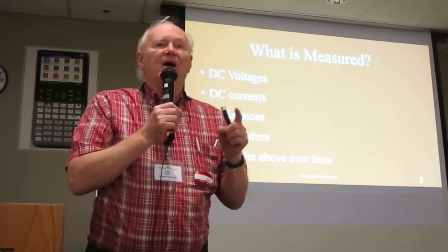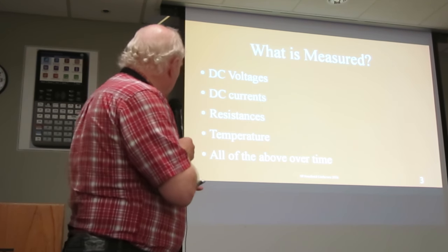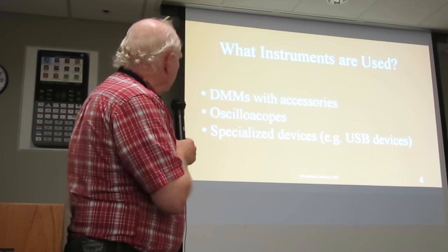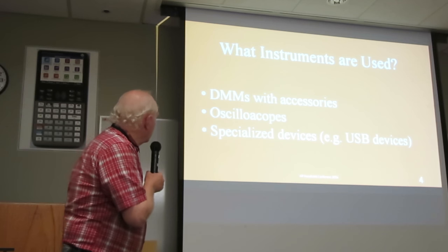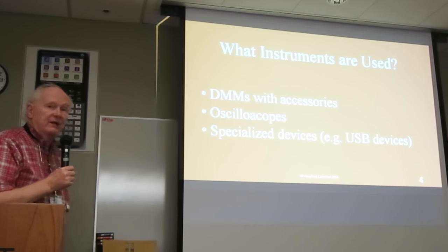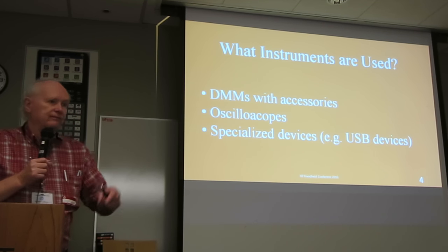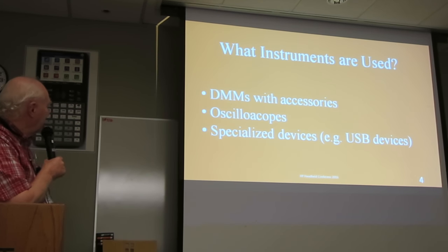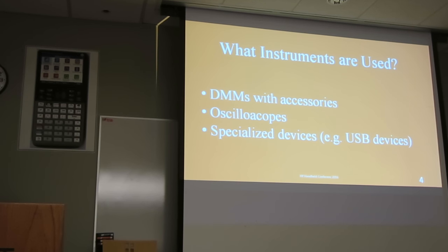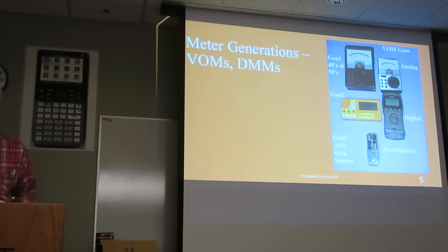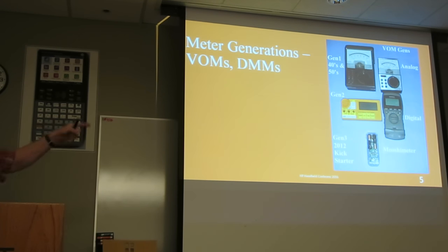Now, that's the whole point of my talk today. The instruments typically used to do this are digital multimeters — DMMs — with any accessories, and oscilloscopes, which are not really essential. You don't have to go and buy an oscilloscope. You can totally fix your calculator without one. And maybe some specialized devices, like USB devices. For convenience, I'm going to put volt-ohmmeters and digital multimeters into three generations.